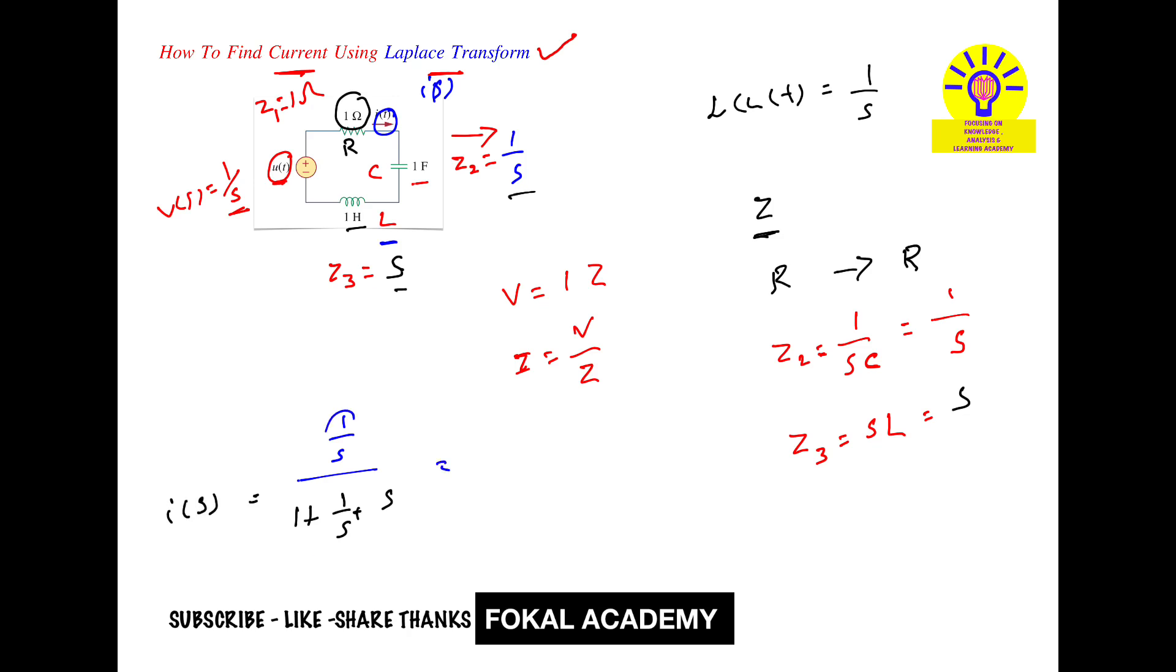Now multiply 1 by S to all three terms. We get 1 by S times 1 is S, 1 by S times S cancels to 1, and S times S is S squared. So it becomes 1 by S squared plus S plus 1.